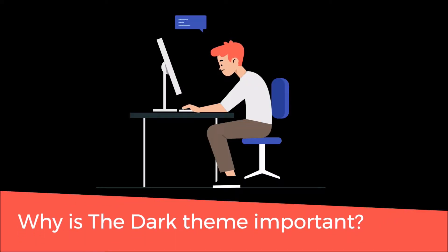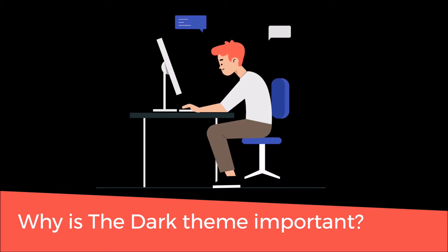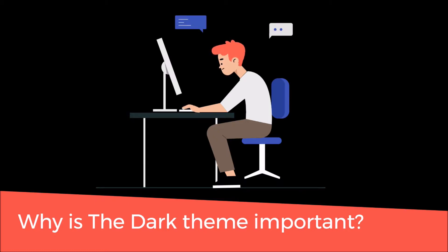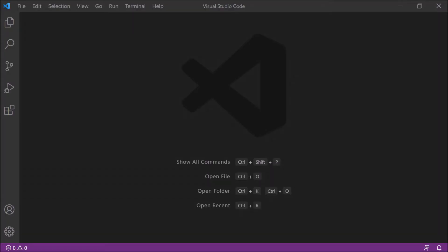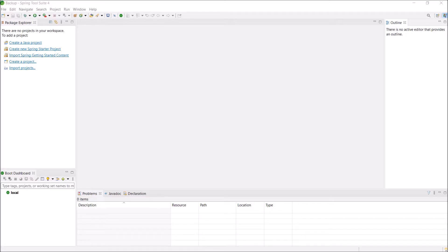Why is the dark theme important? Because nowadays developers are spending too much time with the computer. The problem with the light color is that it is bright and it is not good for your eyes. That's why every IDE or website is changing their theme from light to dark. As you can see, Visual Studio has a dark theme, IntelliJ has a dark theme — then what is wrong with Spring Source or Eclipse? You can feel the difference when the theme is light or dark.